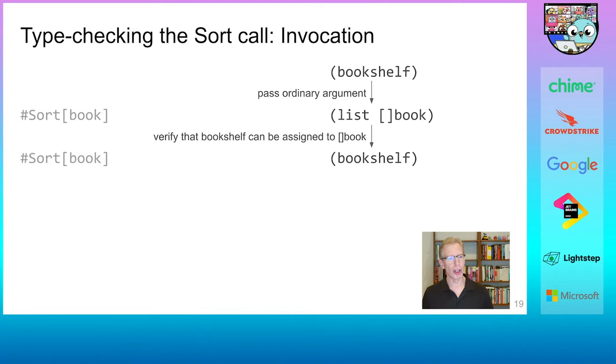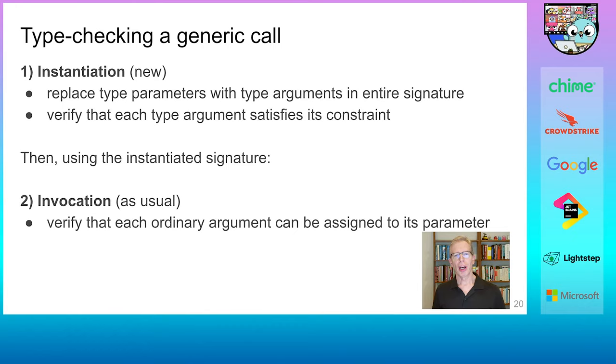Now, once we have that instantiated and now ordinary function, the rest of the function call is type checked as usual. The compiler simply needs to verify that bookshelf can be assigned to a slice of books, which as expected, it can. And with this, the compiler can proceed with generating code for the function invocation.